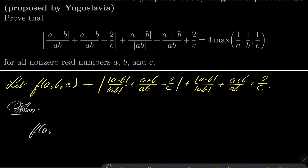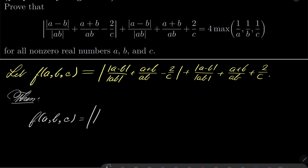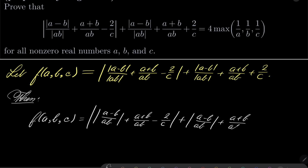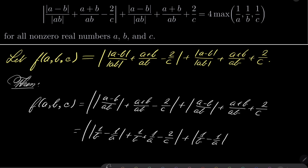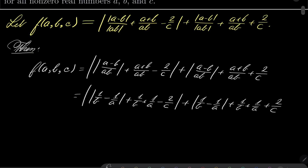We can write f(a, b, c) with the first absolute value containing |a - b|/ab + (a + b)/ab - 2/c, plus the absolute value of |a - b|/ab + (a + b)/ab + 2/c. Notice that the first fraction can be split: it is 1/b - 1/a. The second fraction is 1/b + 1/a. So our expression becomes |1/b - 1/a + 1/b + 1/a - 2/c| + |1/b - 1/a + 1/b + 1/a + 2/c|.